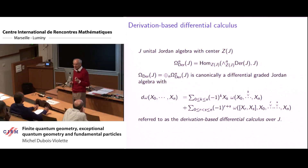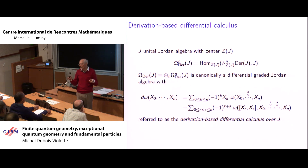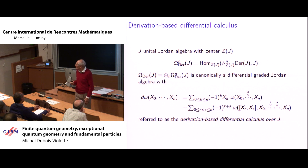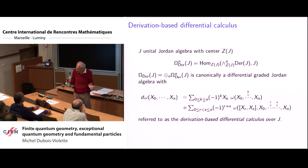The reason is that you can have several connections of this internal connection such that the curvature vanishes, but which are not equivalent. If you take an action — the Euclidean action being the norm of the curvature squared — this means you have several minima, which are interesting to interpret as several vacuums. To start a quantum theory you have to choose one and make a development around it, and this is exactly the Higgs phenomenon.